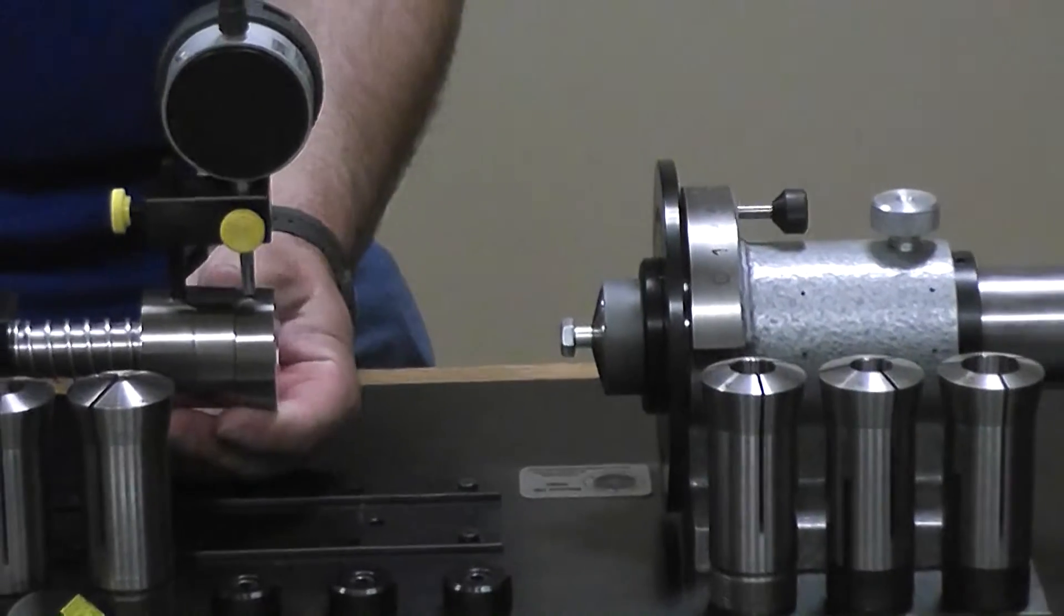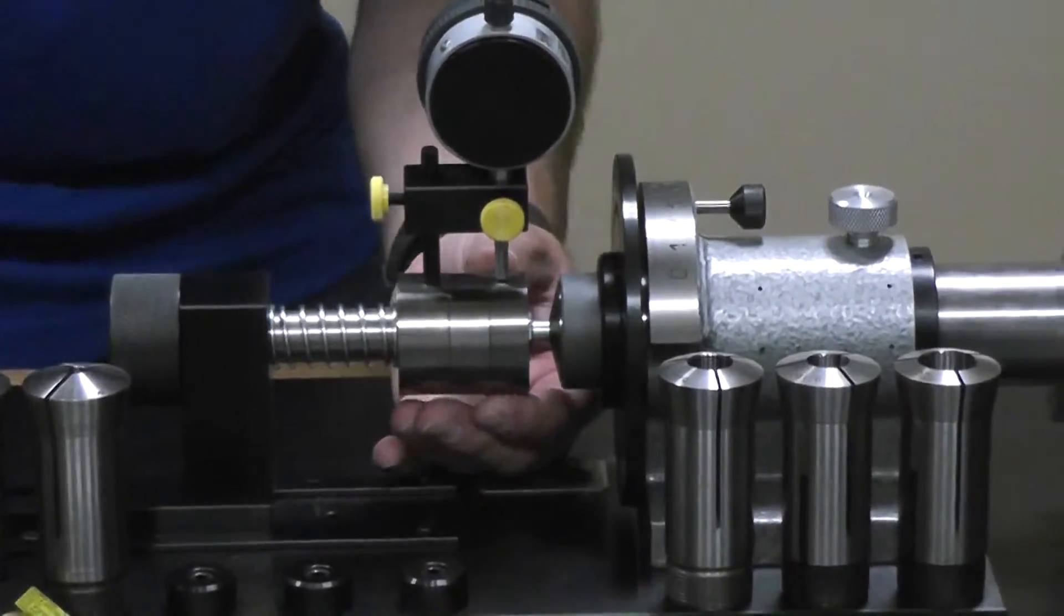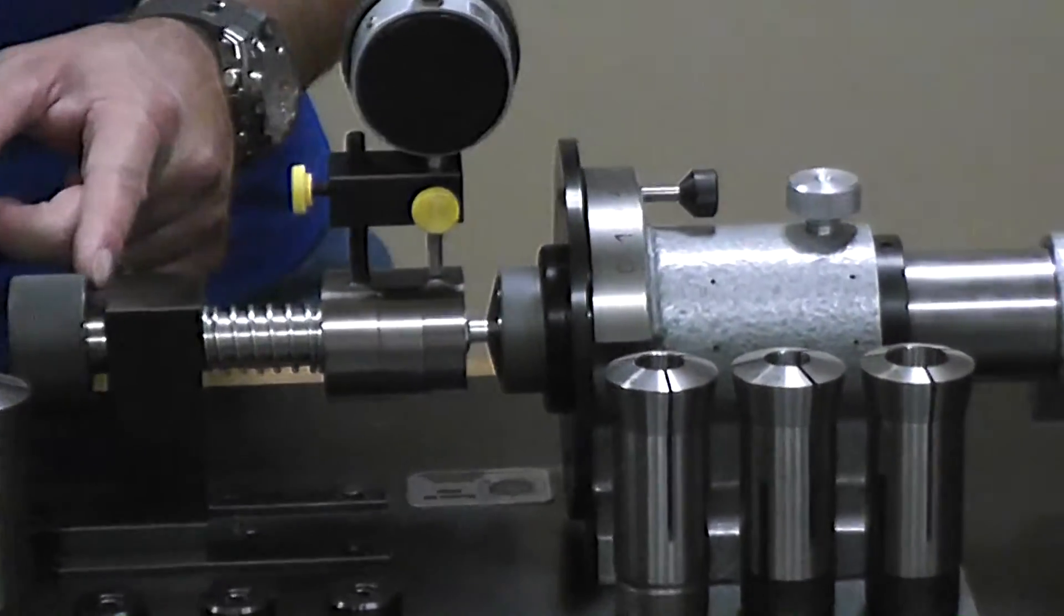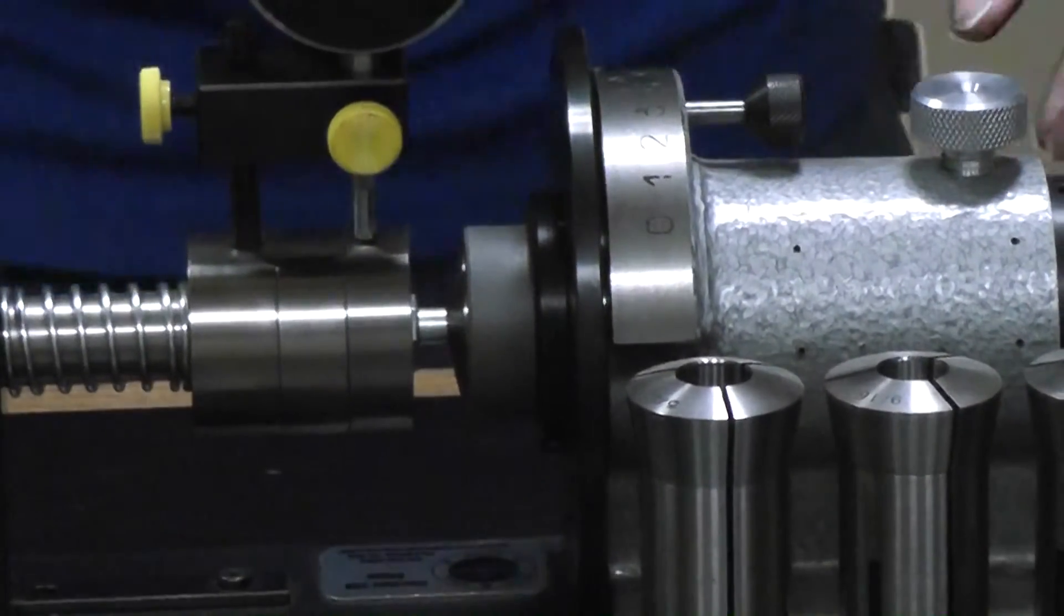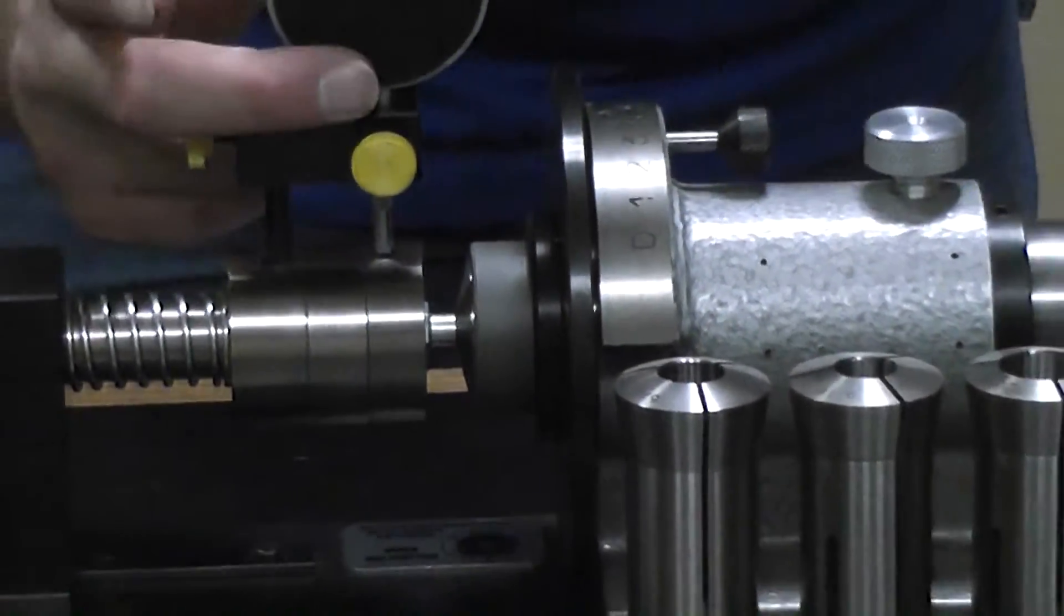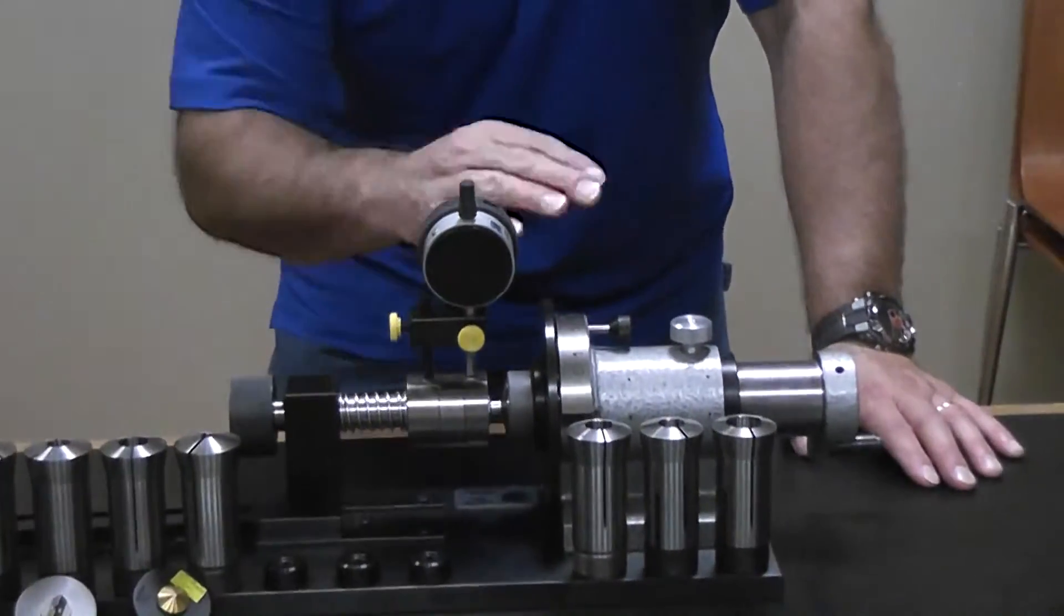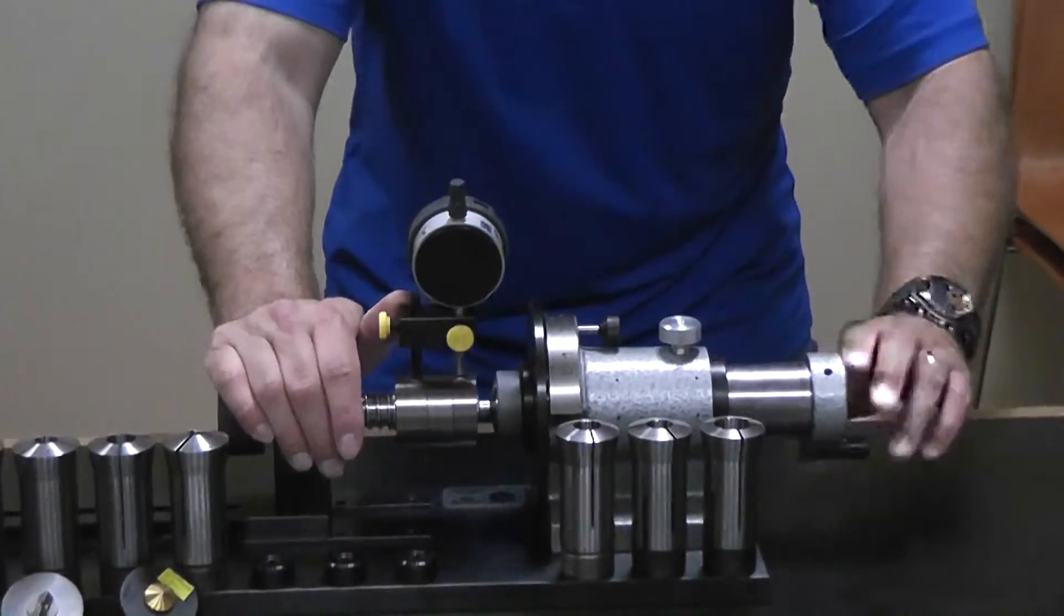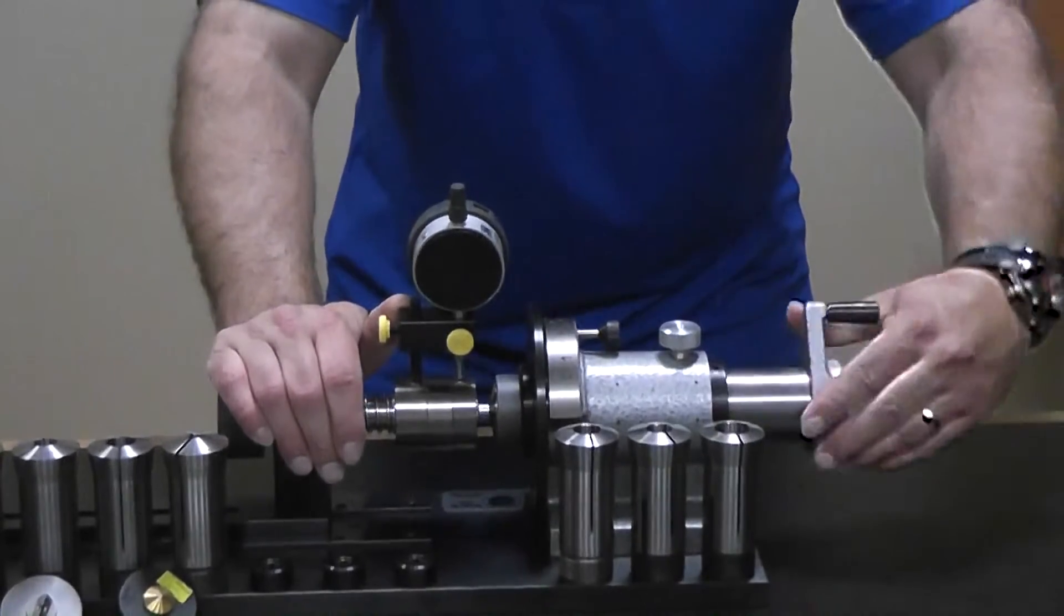We loosen our tail stock. We move it up into position, aligning the head with the hex. We put some extra pressure on there to make sure it seats properly. Tighten everything down. Once again, we hit our preset set button so that our indicator is zeroed. And we take our 360 degrees around three times.